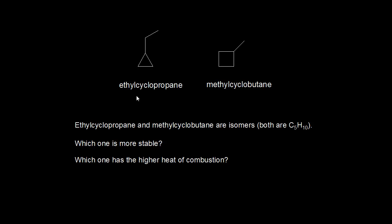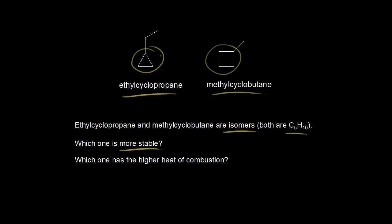Now that we understand the stability of cycloalkanes, let's do a quick problem. On the left we have ethyl cyclopropane, and on the right we have methyl cyclobutane. They're isomers of each other — both have the molecular formula C5H10. Which isomer is more stable? We're comparing a three-membered ring to a four-membered ring, and we know that cyclopropane is higher energy with more strain associated with it. So ethyl cyclopropane is the less stable isomer, making methyl cyclobutane the more stable isomer with less strain.